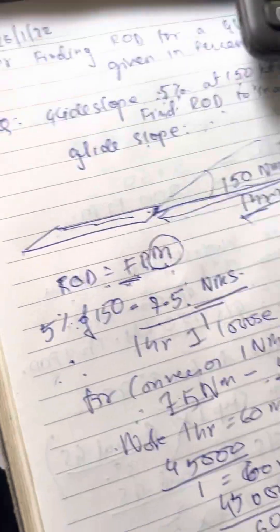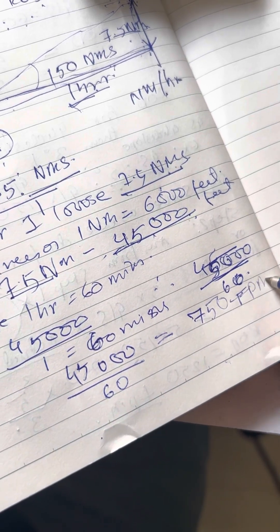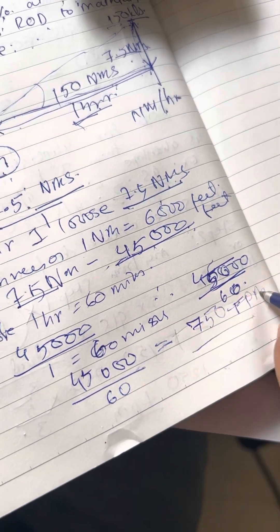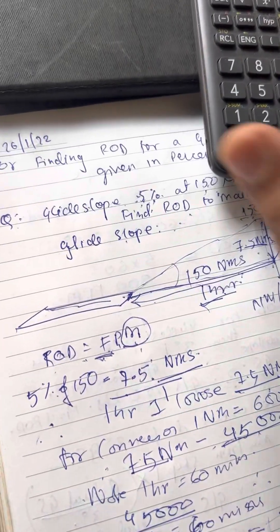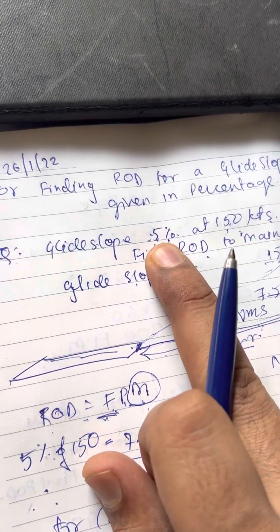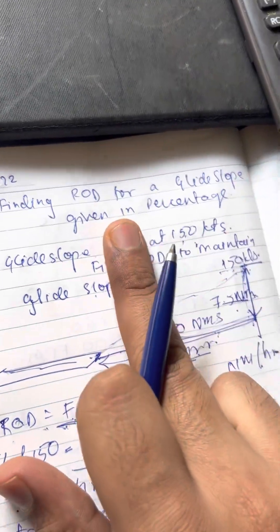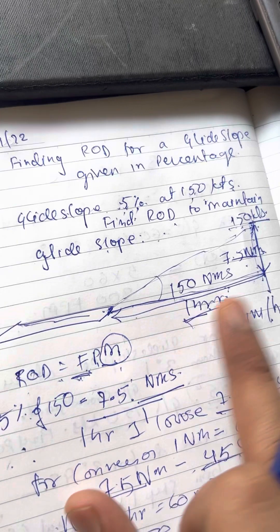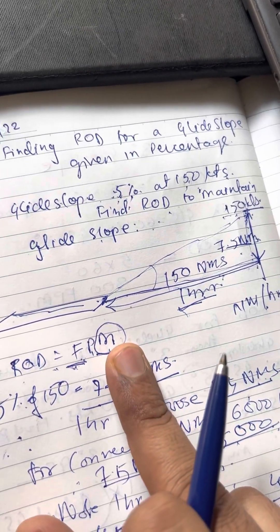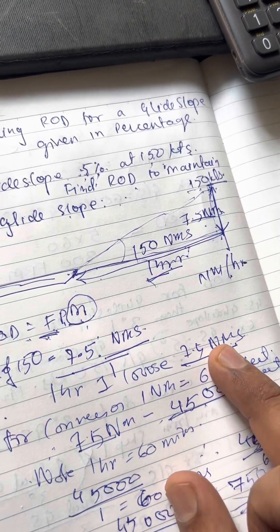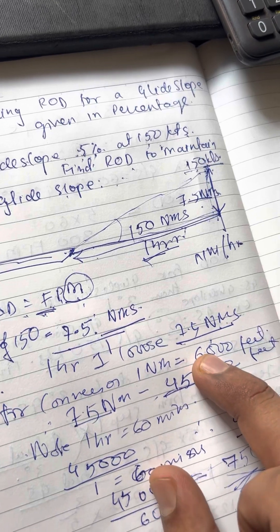So, my correct answer is 750 feet per minute. I hope you have understood. This is for 5% percentage of glide slope. Find the percentage of your ground speed. The answer you get is the vertical height lost in nautical miles in an hour. You need to find it in feet per minute. So...